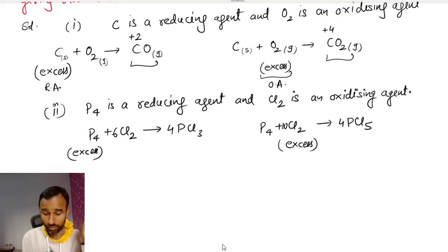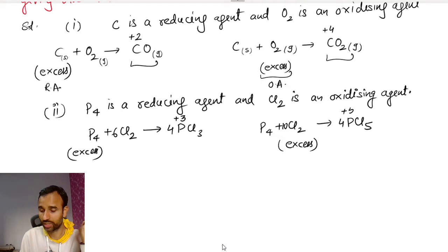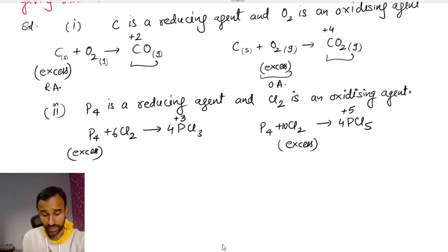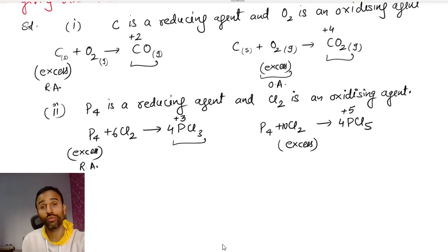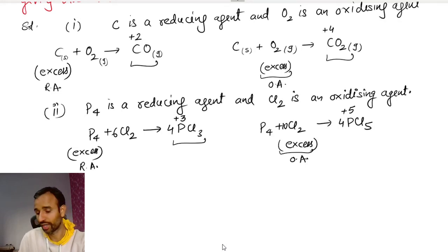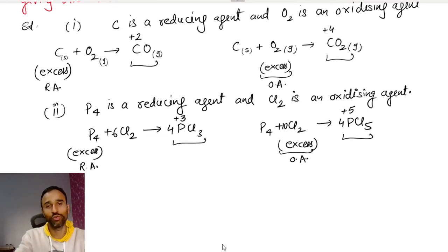In PCl₃, the oxidation state of phosphorus is plus 3. In PCl₅, the oxidation state of phosphorus is plus 5. That means if the reducing agent is in excess, we get a compound with lower oxidation state. If the oxidizing agent is in excess, we get a compound with higher oxidation state. This is the second illustration.